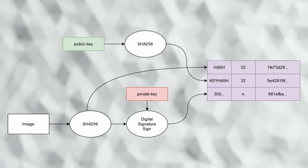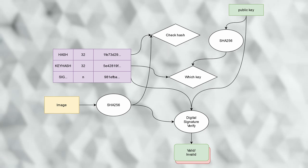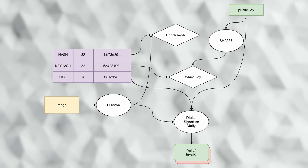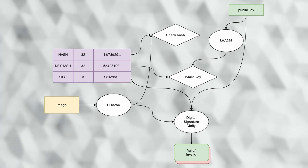At the time I am making this video, there are five possible algorithms. To verify the signature, MCU boot will use the keyhash to determine which public key to use. It will then hash the image, and feed the digital signature, the public key, and the image hash into the verify operation. If this returns true, we know that someone had the private key at some point and signed this particular image.